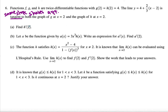So I want you to find h prime of 2. We know that this line is tangent to h when x equals 2. Therefore, the slope of the tangent line is equal to h prime of 2, which is equal to 2/3. So we realize that h prime of 2 is equal to 2/3.